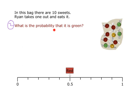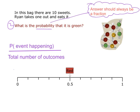Question number two asks: what is the probability that Ryan selects a green one from the bag? When I see the word probability I give my answer in a fraction and use my formula: probability of the event happening over the total number of outcomes. The event is selecting a green sweet. On the bottom there are 10 sweets, so 10 different outcomes. The probability of getting a green one — counting — is 3. So it is 3 out of 10. I can now mark that on my scale.